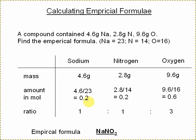And that comes out as 0.2 for sodium, 0.2 for nitrogen, and 0.6 for oxygen. So we would say this is in a ratio of 1 to 1 to 3. Give the empirical formula of NaNO3.